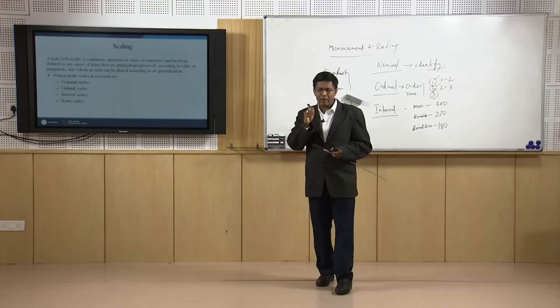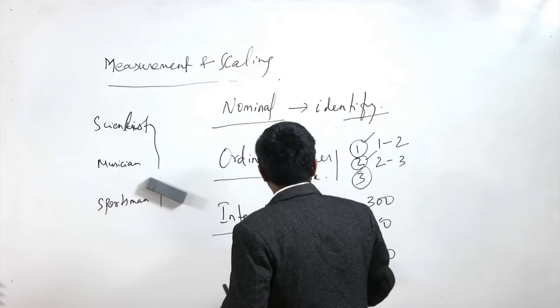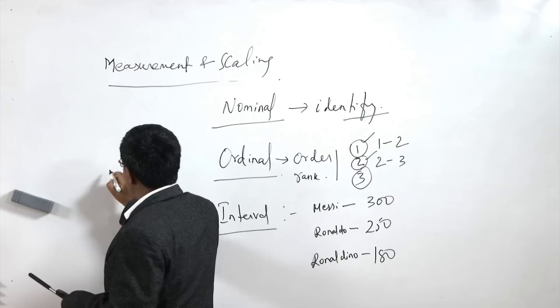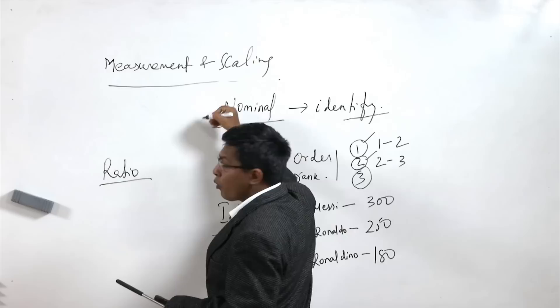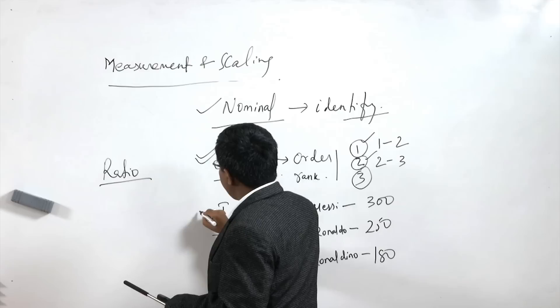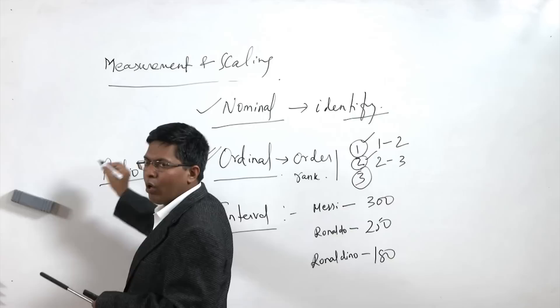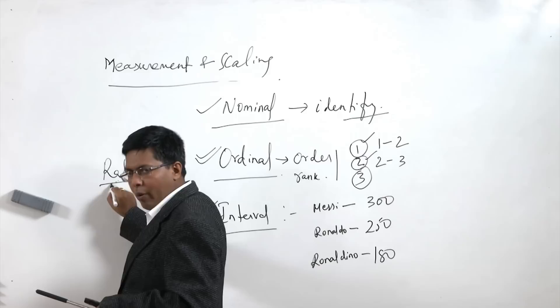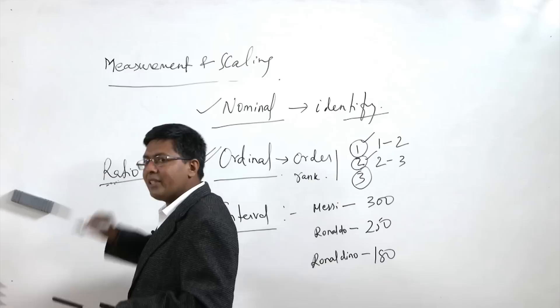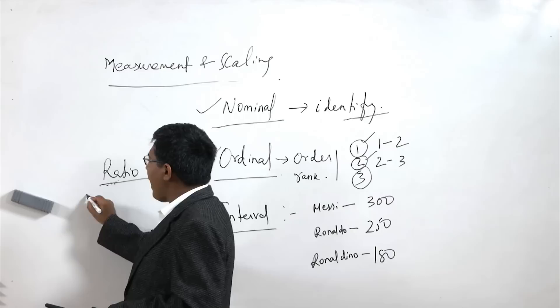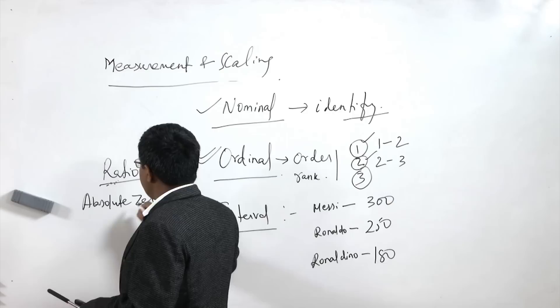The fourth is the ratio scale. The ratio scale has all the properties — it has the properties of nominal, ordinal, and interval, plus its own property. Its own property is the absolute zero point, which is present in the case of the ratio scale but not in the interval scale. These four scales are all progressive: nominal is the most elementary, then ordinal, then interval, and ratio has all the properties of the other three and itself.